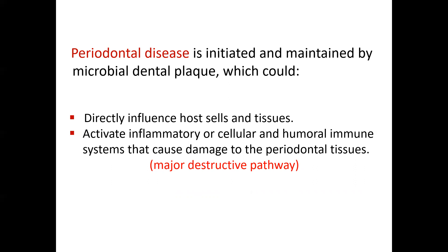On the last one, you remember the keystone pathogen hypothesis — the keystone species, and also not only the keystone one but different periodontal pathogens — the pathogenic periodontal ones that have the ability to directly influence the host cells and tissues, or activate the major destructive pathways from the host by activating the inflammatory or cellular-humoral immune system, causing damage to the periodontal tissues.